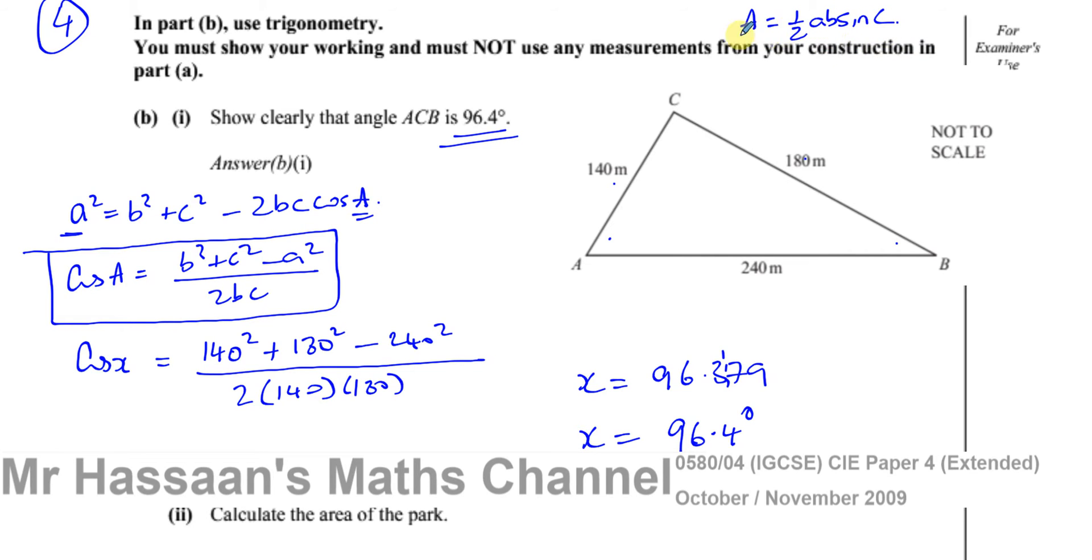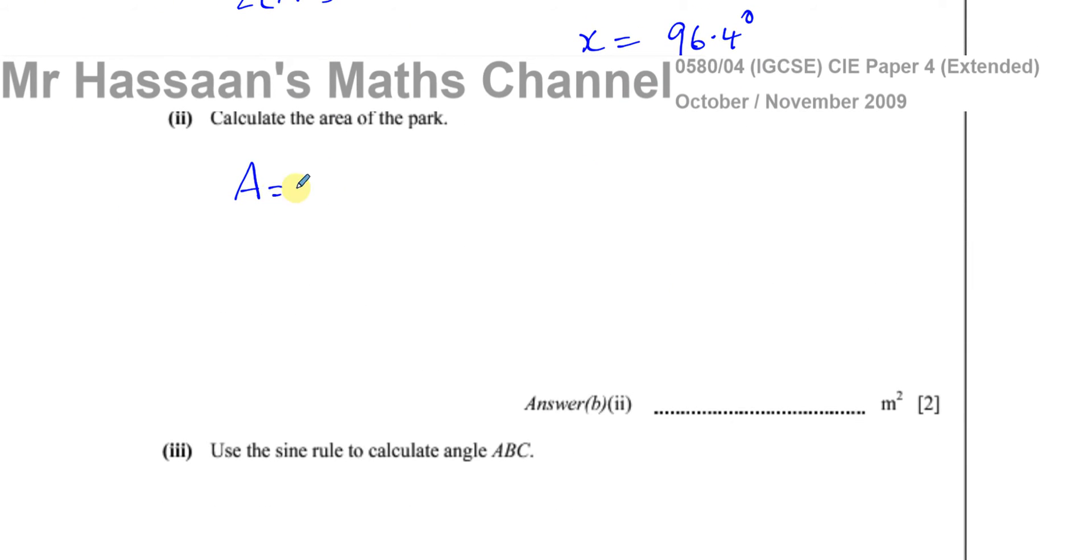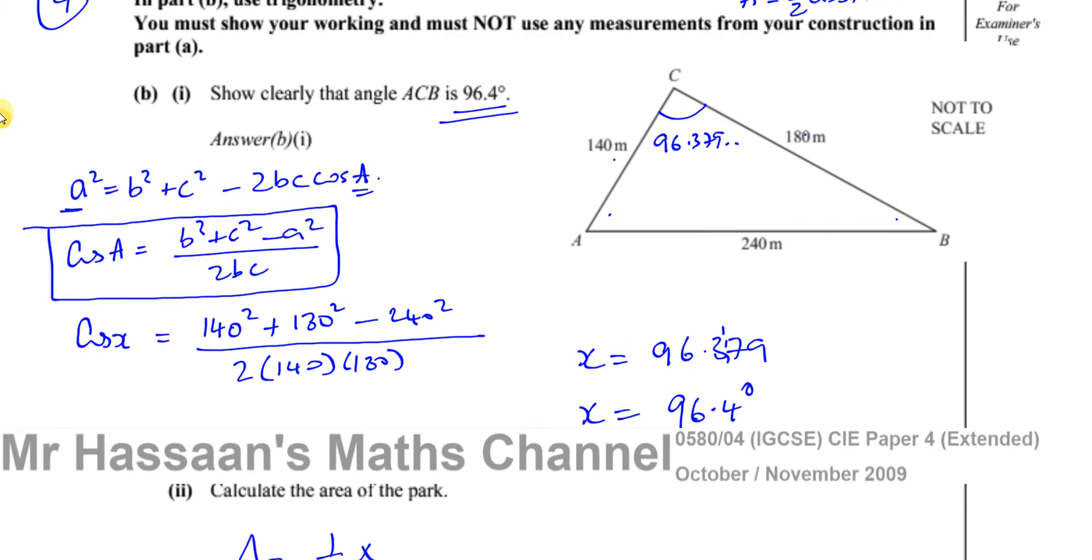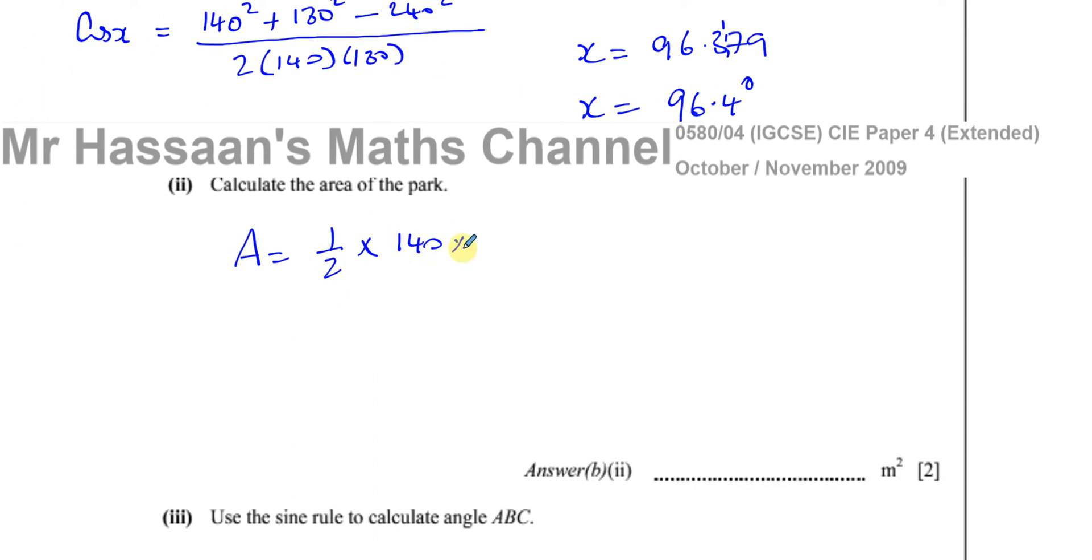Now, what that means is that if you have the angle which we do now, which is 96.4, I'm going to write it as 96.379 is the accurate form. And I know two sides that make the angle. I can use this formula here. So the a and the b are the two sides that make the angle, and the c is the angle that is between those two sides. If you do this, basically what this formula does for you, it actually finds the vertical height of the triangle. So basically your a equals a half a, b, sine c. So you know that the area is equal to a half times one of the sides, which is 140 times the other side, which is 180.